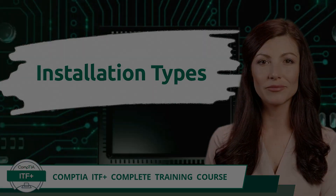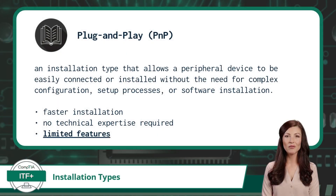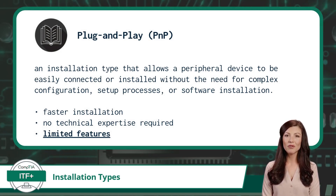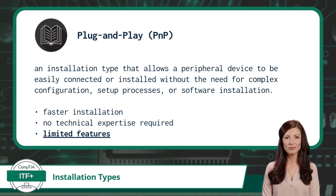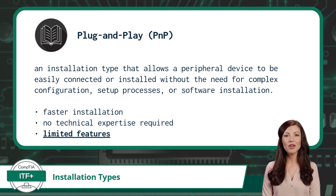Installation types. Our first installation type for peripheral devices is plug and play. Plug and play refers to an installation type that allows a peripheral device to be easily connected or installed without the need for complex configuration, set up processes, or software installation. It allows for seamless integration and immediate functionality, reducing the need for an average user to be technically proficient.